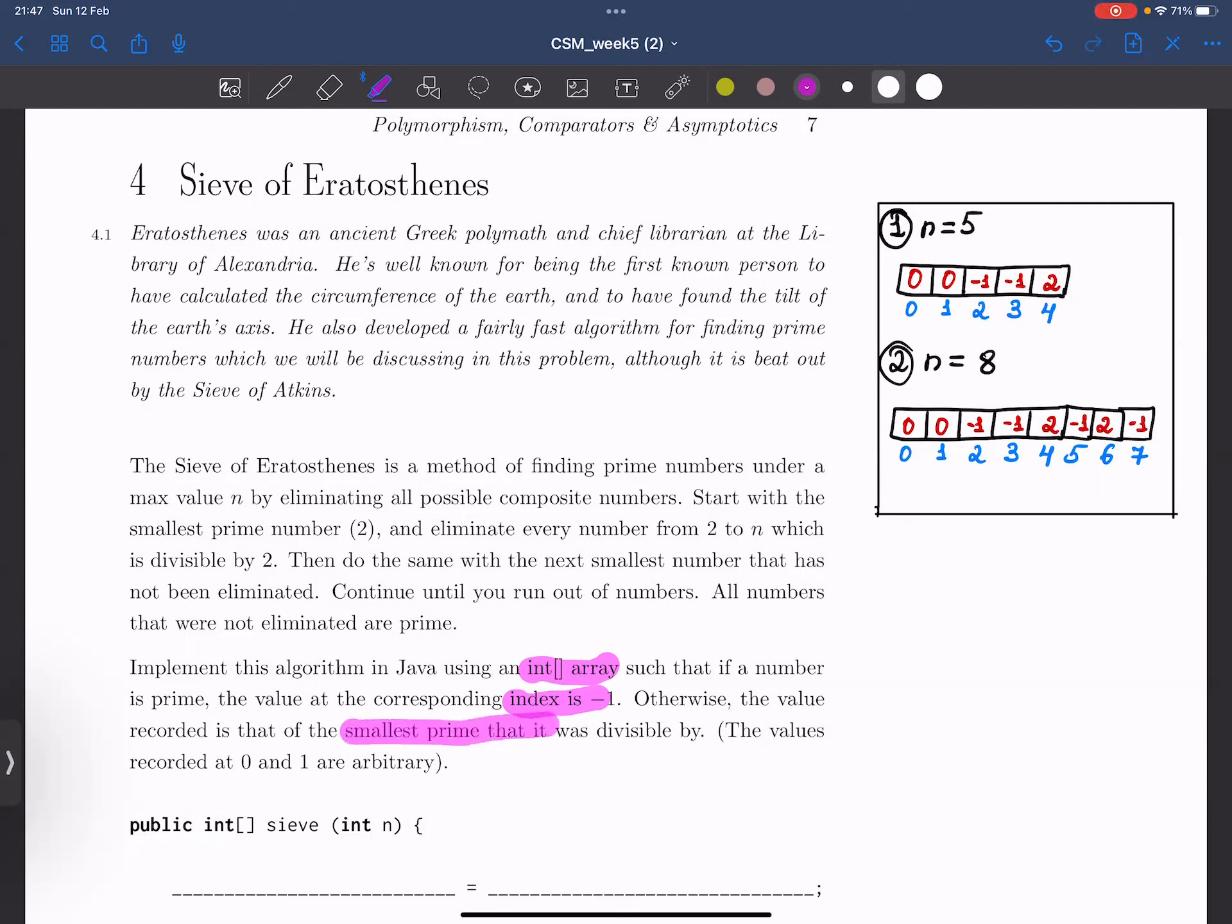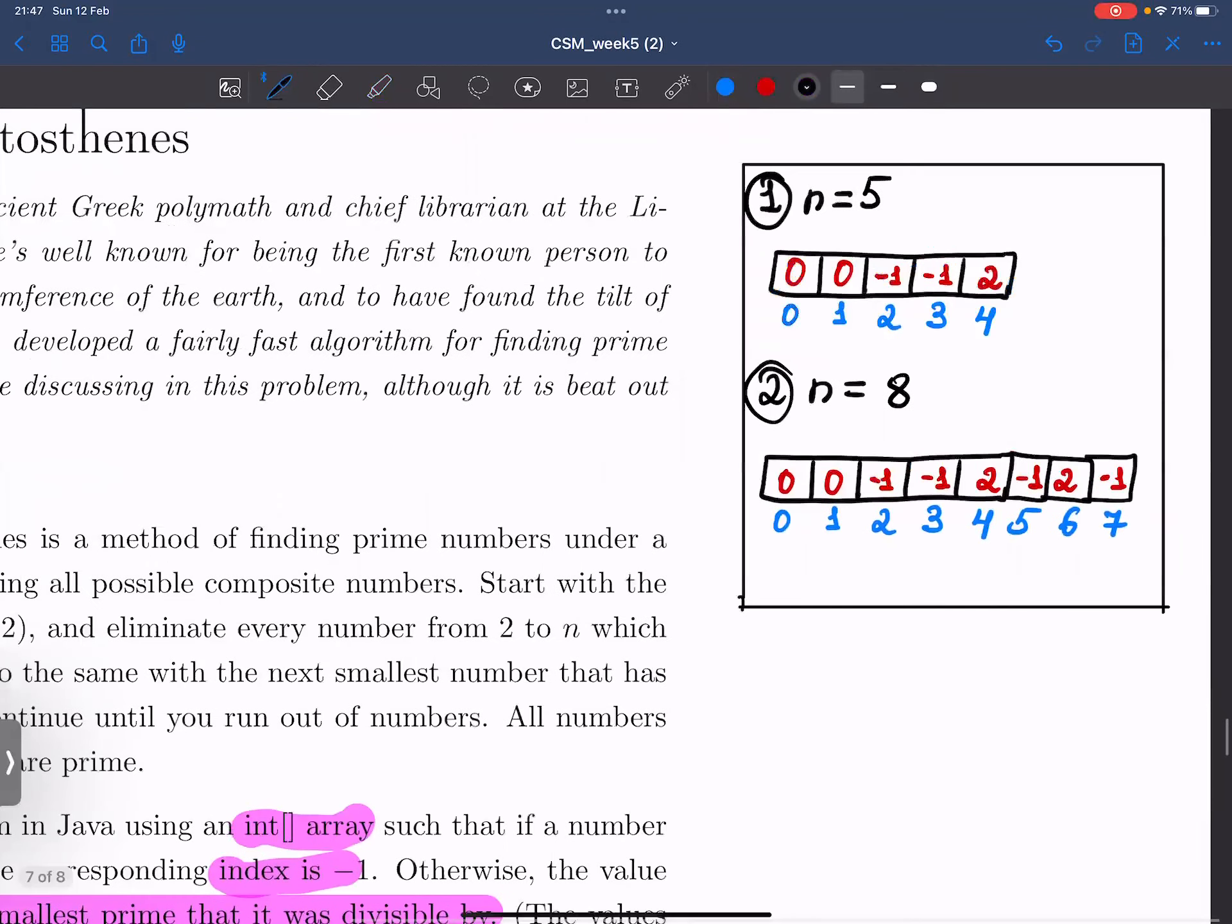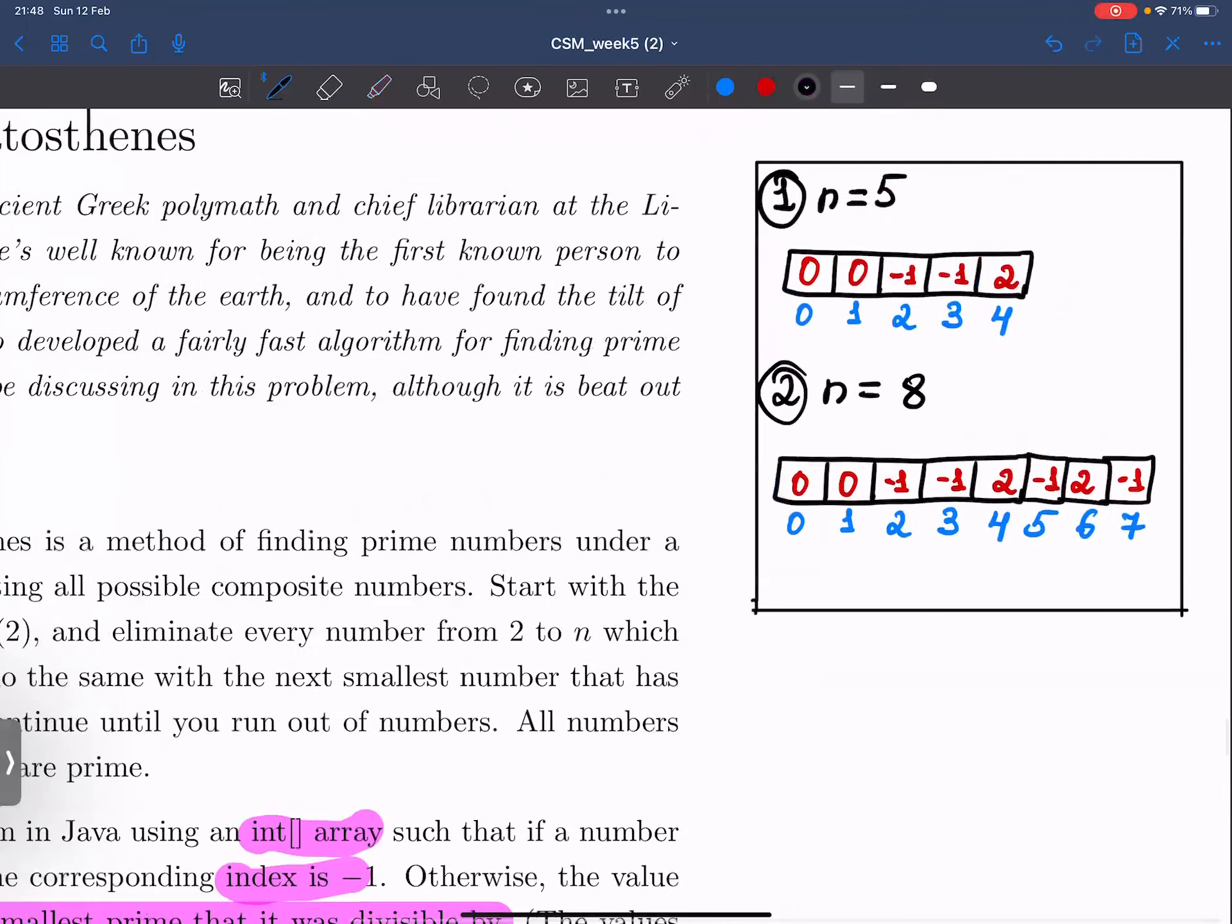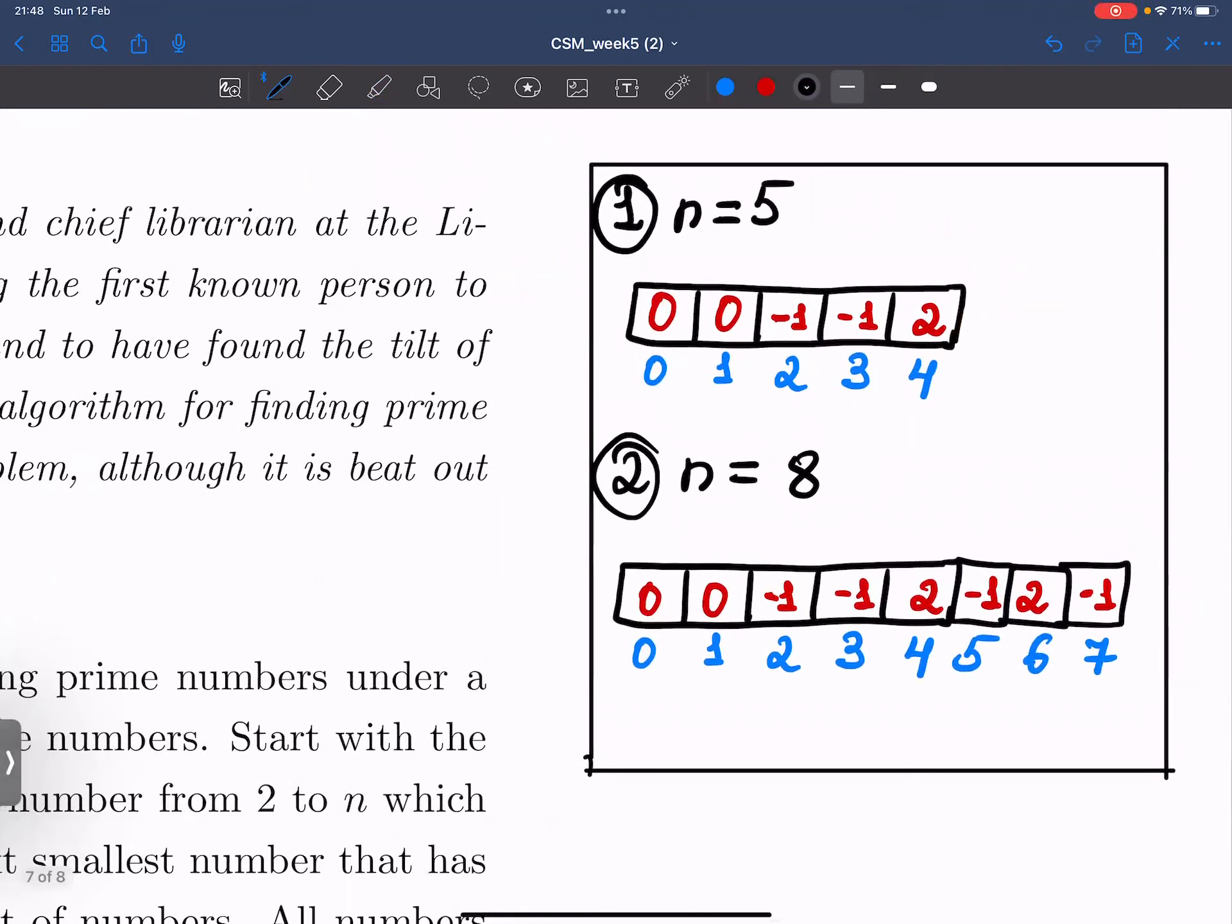So let's mark this line 2. And the values recorded at 0 and 1 are arbitrary. So let's just say that we'll use the value 0 for the values recorded at index 0 and 1. On the right side of the page, you can see two examples of this algorithm and its result when our n is equal to 5 and 8.